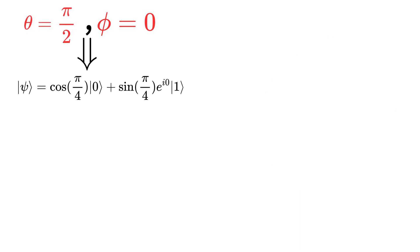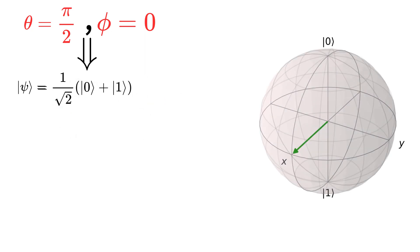If we put theta equal to pi over 2 and phi equal to 0, we get cosine of pi over 4 times ket 0 plus sine of pi over 4 times e to the i*0 times ket 1. Since cosine and sine of pi over 4 both equal 1 over square root of 2, the state is a superposition: 1 over square root of 2 times (ket 0 plus ket 1), which we call the plus state.